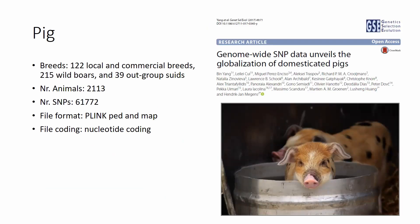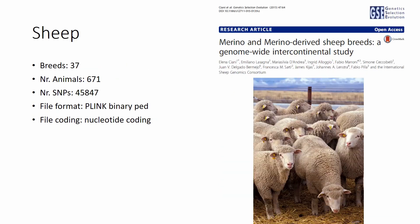We have pig data published in GSE from 122 local and commercial pig breeds, plus some wild boars and some outgroup suids. In total more than 2,100 animals genotyped with more than 61,000 SNPs. The file format is also convenient PED and MAP files with nucleotide coding. We also have sheep data published in GSE from 37 breeds, 671 animals genotyped with more than 45,000 SNPs.